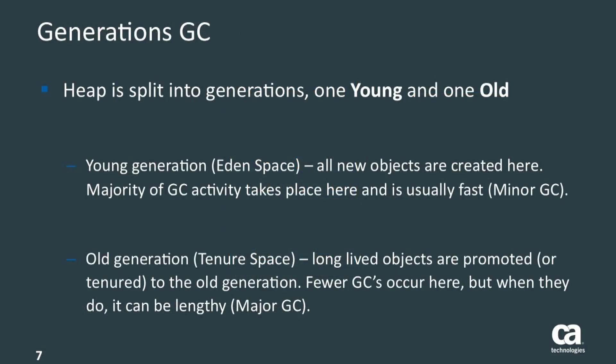Let's look at Generational GC. Sun came up with this concept based on the heuristic that not all objects have the same lifespan. Some Java objects have very short lifespans and others can last for the entire length of the application. Based on these heuristics, Sun introduced two different memory pools: one called Eden space (young generation) and the other called tenure space (old generation). The Eden space is where new objects are created, with the idea that they'll be garbage collected really fast. If they're not garbage collected — because they happen to be longer-lived — they'll get promoted over time to the tenure space, where long-lived objects actually reside.